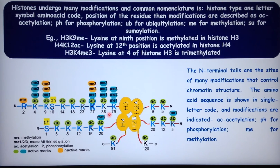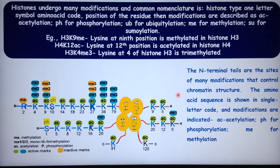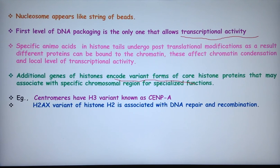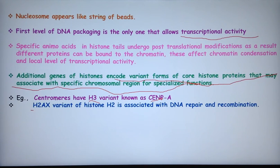The tails of histones H4, H3, H2A, and H2B at lysine or serine residues are modified with many groups — they can be acetylated, phosphorylated, or methylated. The nucleosome appears like a string of beads, and the first level of DNA packaging is the only one that allows transcriptional activity. Specific amino acids in the histone tail undergo post-translational modifications, and variant forms of core histone proteins associate with specific chromosomal regions — for example, CENPA is an H3 variant at centromeres, and H2AX is associated with DNA repair and recombination.